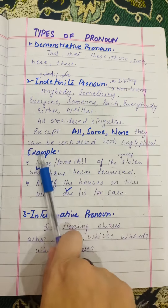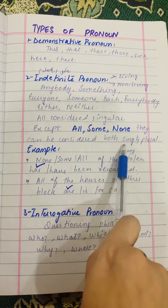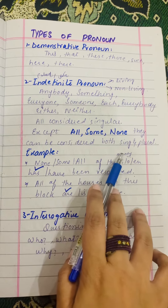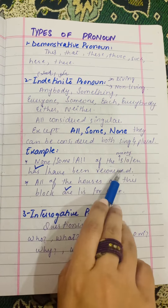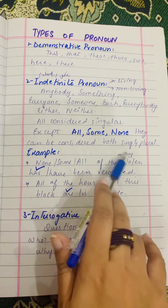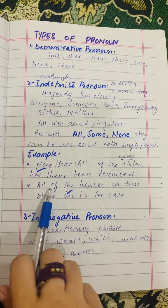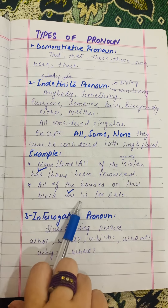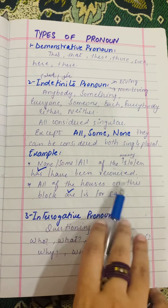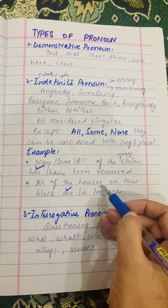However, three indefinite pronouns — all, none, some — can be either singular or plural. For example: 'All of this money stolen has been recovered' (singular). But 'All of the houses on this block are for sale' is plural. Similarly, 'None of the money stolen has been recovered' (singular), while 'None of the houses on this block are for sale' refers to plural, because it is referring to houses which is plural.